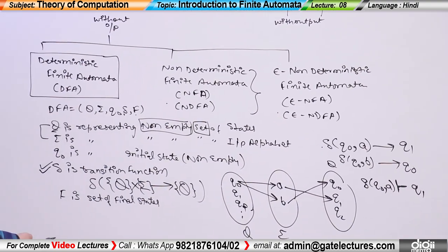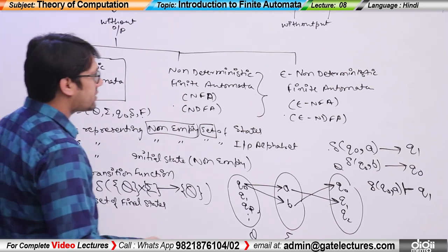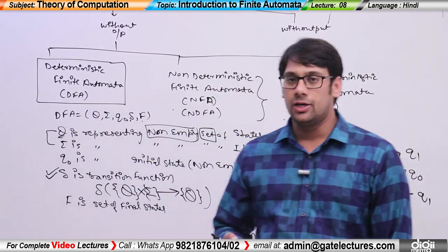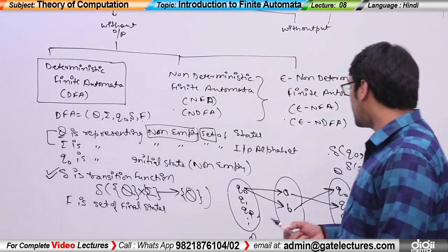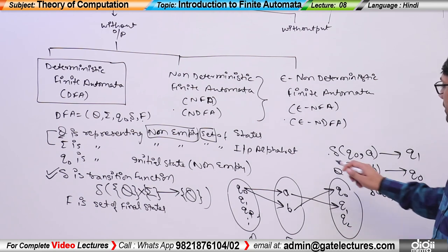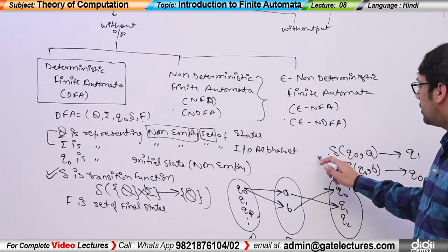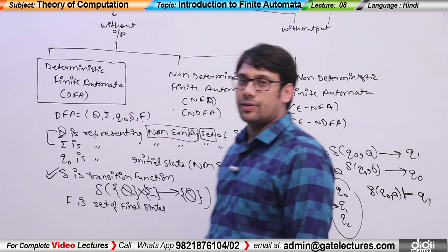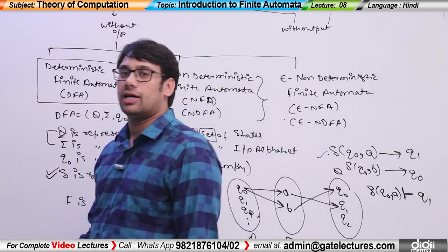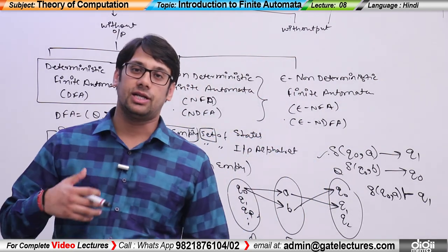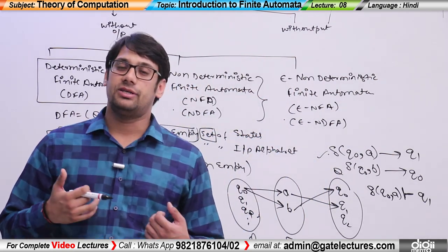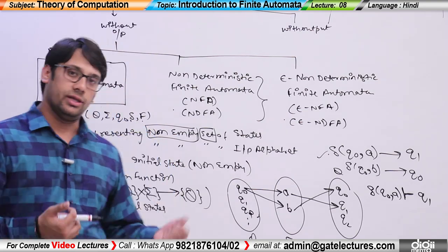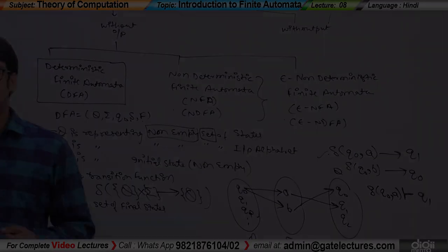So in the next video, I will take a simple example of finite automata. With that example, I will show you how the transition function is used, and along with that, I will also explain what a transition table is and how we use a transition table. So we'll meet in the next video. Thank you.